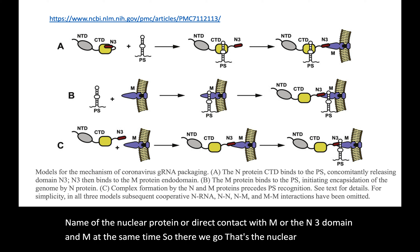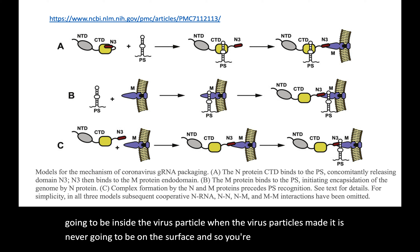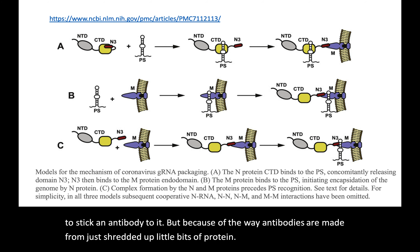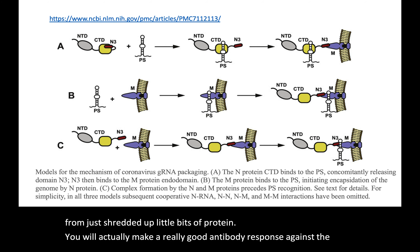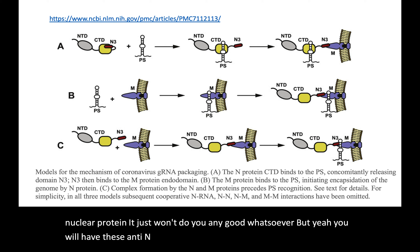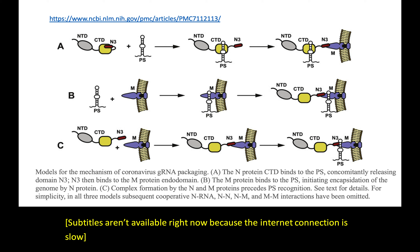The N protein is inside the cell during infection and inside the virus particle once it's assembled — it is never on the surface, so you can never attach an antibody to it. However, because antibodies are made from shredded-up bits of protein, you will actually make a strong antibody response against the N protein; it just won't do you any good. But the nucleoprotein is really good for generating T cells, which might help fight the infection. There are papers from MERS coronavirus where researchers used the nucleoprotein — even though the antibodies it generates are useless — specifically to stimulate T cells to hunt down the virus.